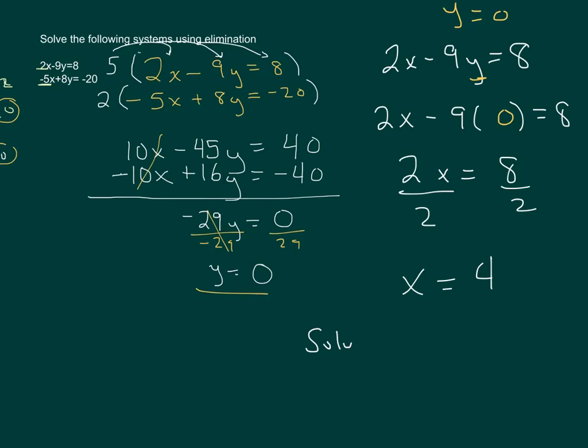So the solution is going to be the point 4, 0. That's the point of intersection.